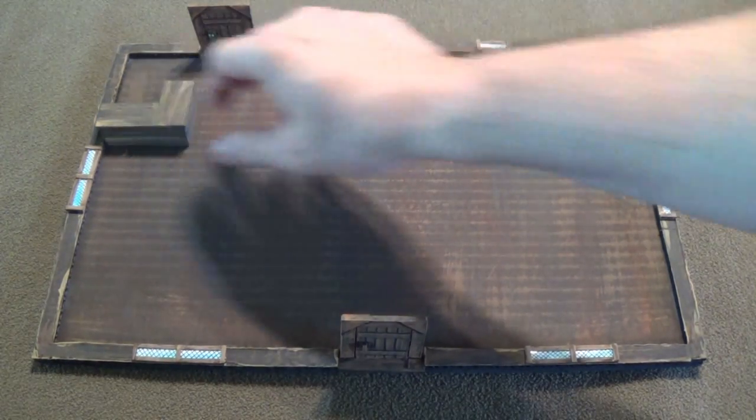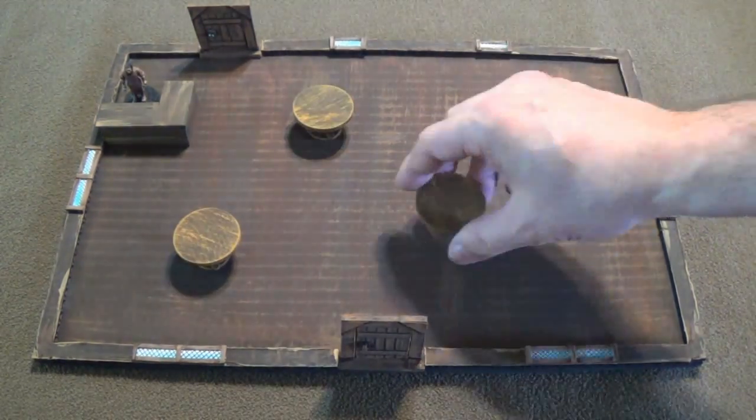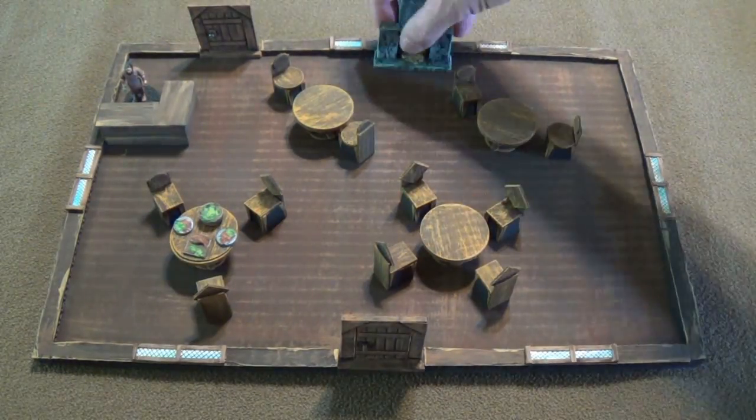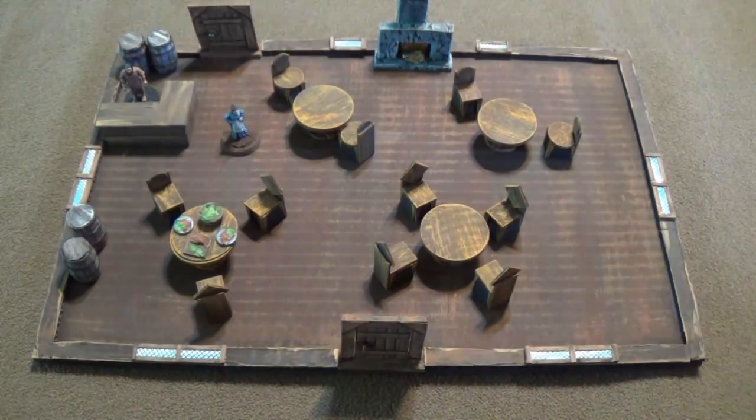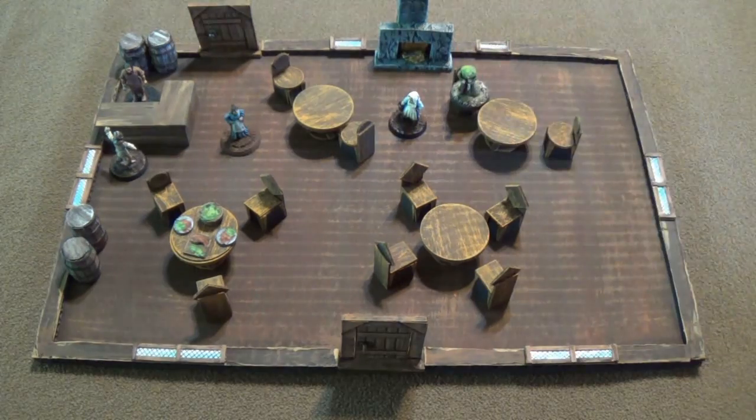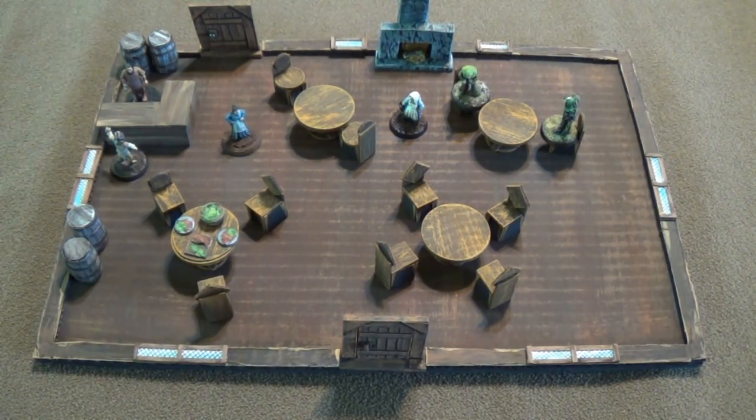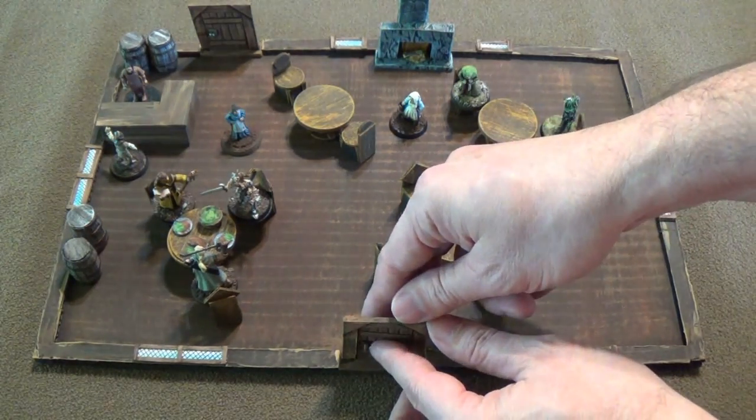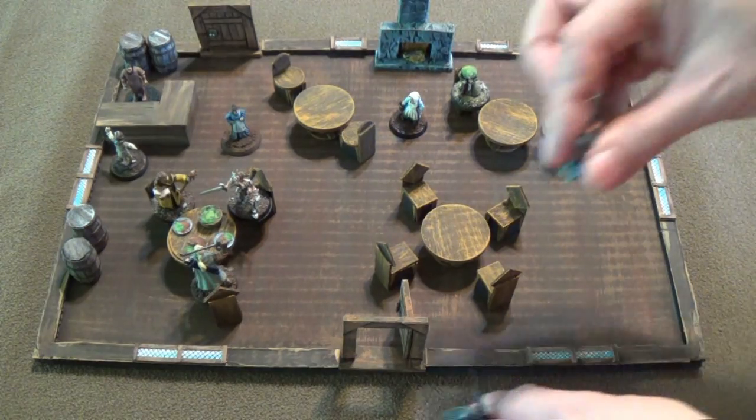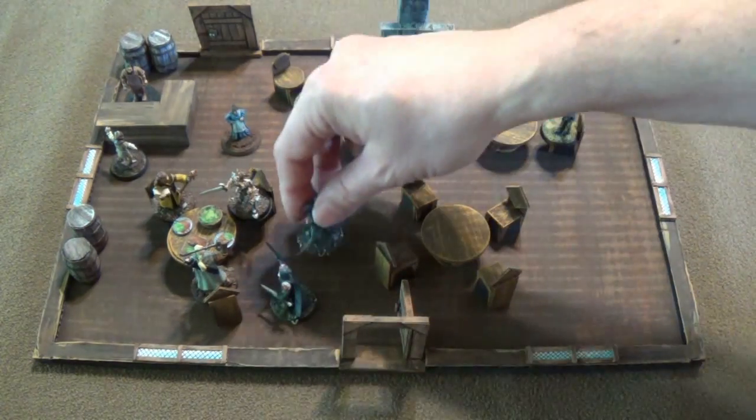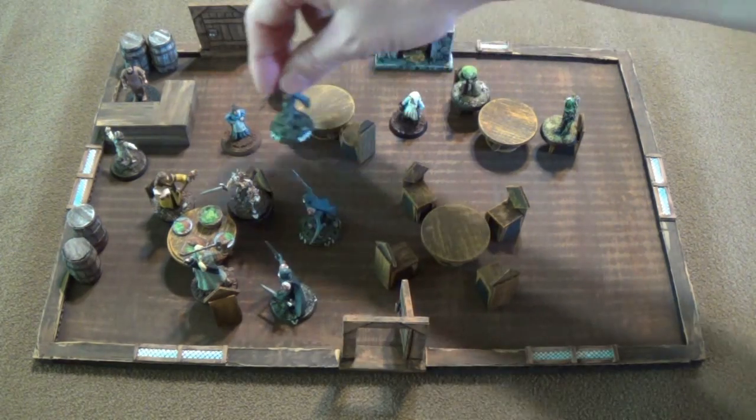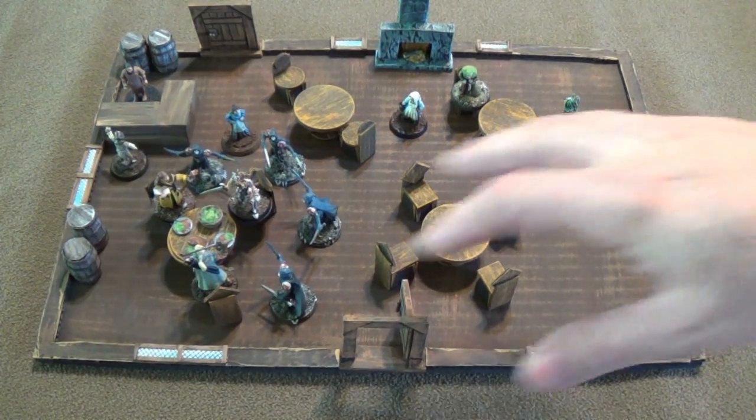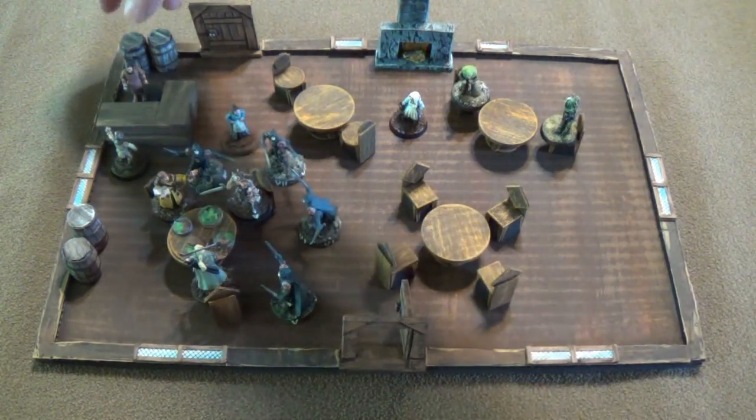So here I have my tavern tile and I'm going to set it up. I've got the bar there. Start putting the tables, chairs, everything in there. Got a fireplace. Got my barrels that I made for this video. Got some servers, patrons. And of course, you have to have the party. So they're at the table. But unfortunately for them, their repast is interrupted by some assassins that have come to hate them for thwarting their evil plans. So they surround the party. And looks like a dangerous bar fight is about to ensue. All right. So here we go. There's the setup.